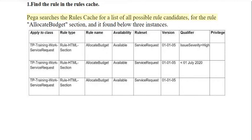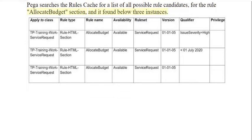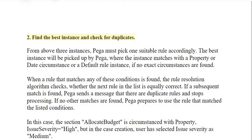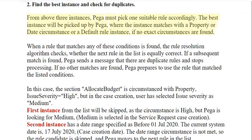PEGA searches the rules cache for a list of all possible rule candidates for the rule 'Allocate Budget' and checks for duplicates. From the three instances, PEGA must pick one suitable rule. The best instance will be picked where the instance matches with a property or date circumstance, or a default rule instance if no exact circumstances are found.